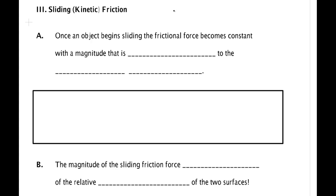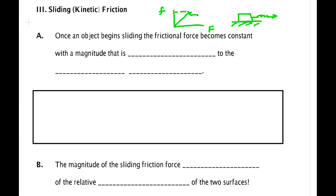In a previous video we had plotted a pulling force versus friction. We had attached a spring to a block and pulled it with a particular force. For a while the object did not accelerate, and the friction force continued to increase until it reached a point which was the maximum static friction.